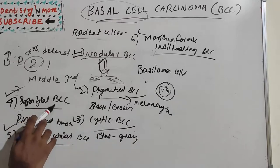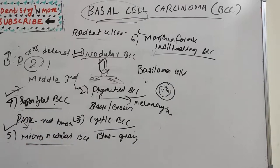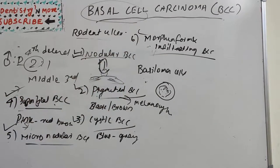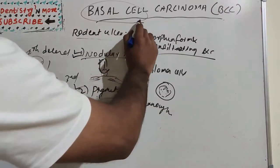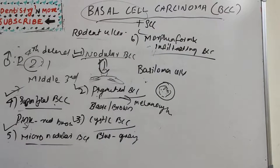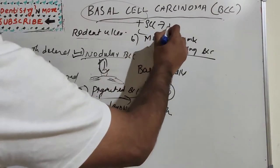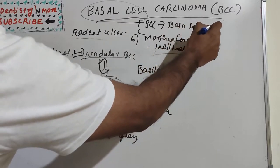In the superficial type, lobules of tumor cells drop from the epidermis in a multifocal pattern. The morpheaform type exhibits infiltrating thin strands of tumor cells in a dense fibrous stroma, while in the infiltrating type these strands are thicker with a spiky, irregular appearance. The micronodular type appears as small nodular aggregates of basaloid cells. When BCC is mixed with squamous cell carcinoma, it is known as basosquamous carcinoma.